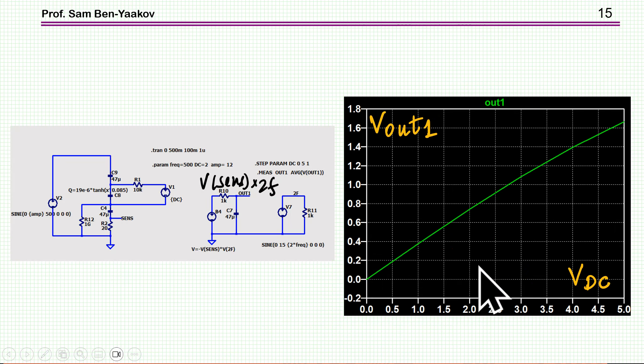Now, in the circuit, we can extract it by multiplying this voltage by a waveform of the second harmonic, and then we get here a straight, well, it's not a straight line, but there's a very nice relationship between the DC that we want to measure and the output after filtering.